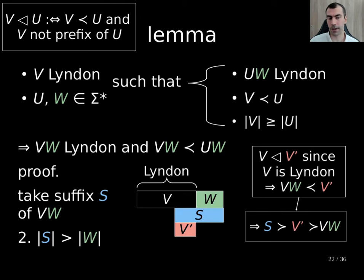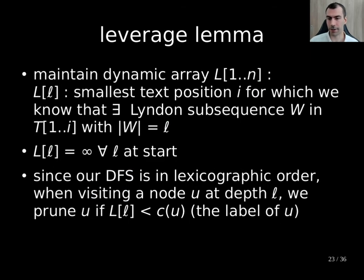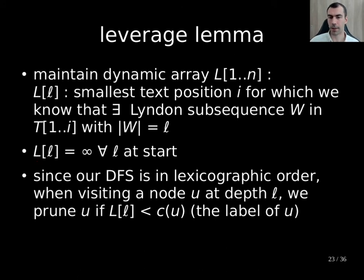What can we make use of from this lemma? We maintain a dynamic array L such that in the l-th position we store the text position i, for which we know there exists a Lyndon subsequence W in T from 1 up to i of the highest length prefix, such that this Lyndon subsequence has length l. Initially we create this array uninitialized, and during our DFS we lower the values of L. During the DFS, done in lexicographic order, when visiting a node U at depth l, we prune U if the l-th entry is smaller than the label of U.